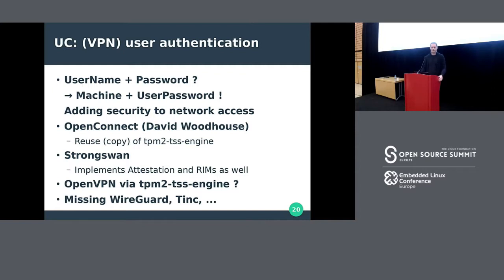Finally, for VPN user authentication, instead of just a username and password, you can require that a certain user at a certain PC be present. There are two implementations: OpenConnect by David Woodhouse — an AnyConnect-compatible open-source implementation — and StrongSwan, an IPSec implementation. OpenVPN should also be easily compatible with the OpenSSL engine we built, though that still needs to be verified.